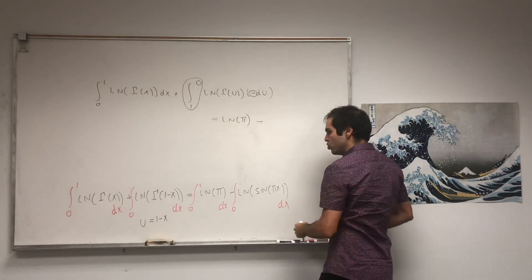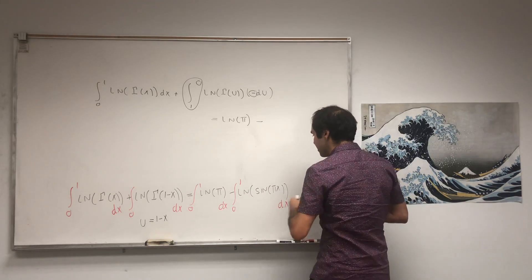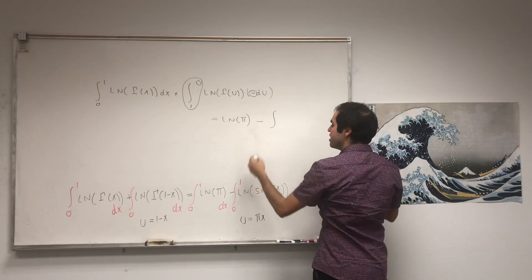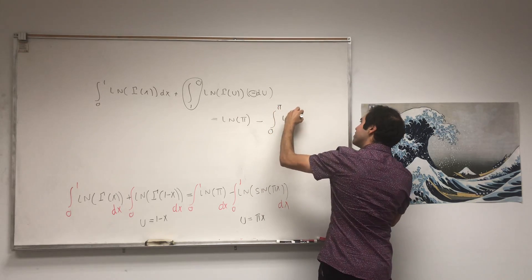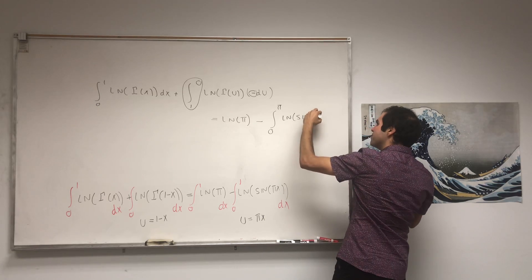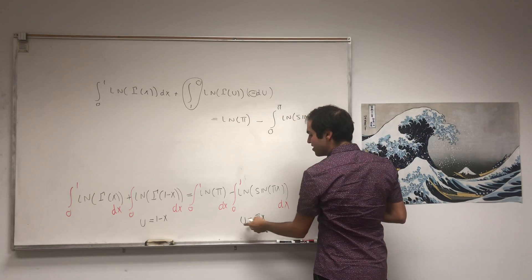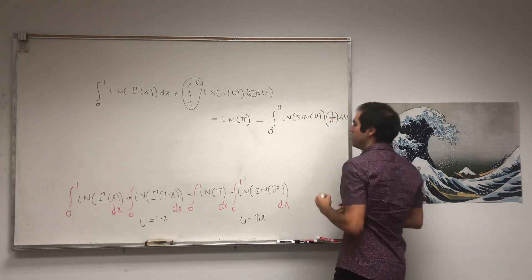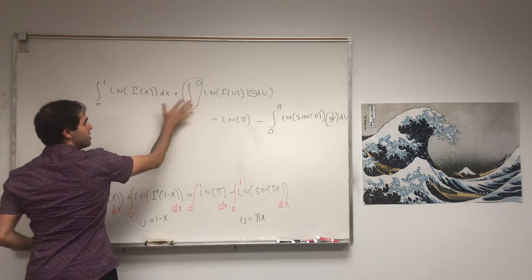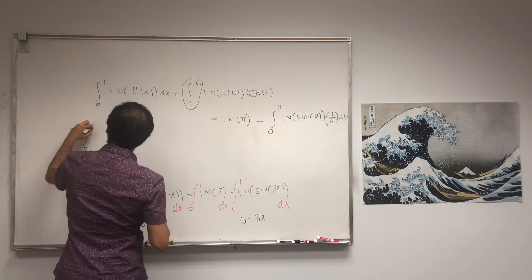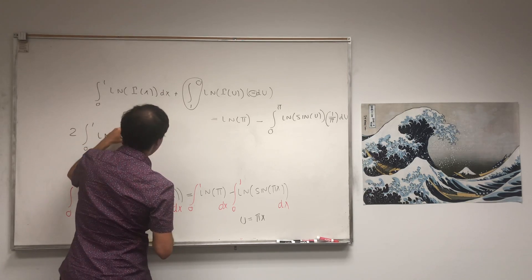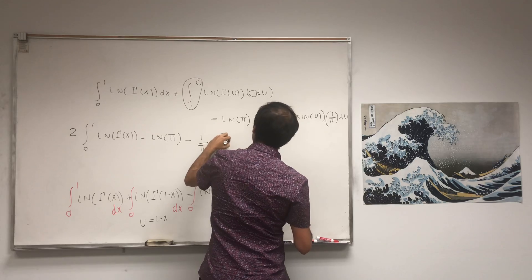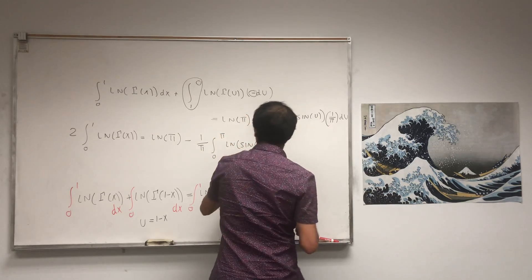For the sine term, let u equal pi x. It becomes the integral from 0 to pi of ln of sine of u. Since du is pi dx, dx is 1 over pi du. So we get the integral from 0 to pi of ln of sine of u times 1 over pi du. Combining everything, 2 times our integral from 0 to 1 of ln of gamma of x equals ln of pi minus 1 over pi times the integral from 0 to pi of ln of sine of x dx.